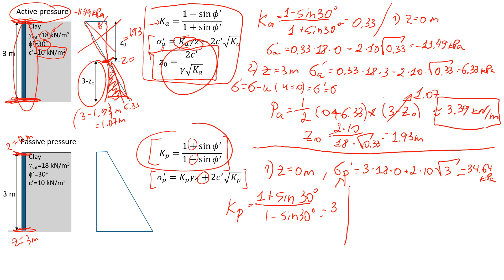Now let's look at the level at the bottom of the wall when z equals 3 meters. The effective passive stress will be: Kp of 3 times unit weight 18 times 3 meters, plus the same cohesion component — which you'll notice does not change with depth — giving a value of 196.64 kPa.